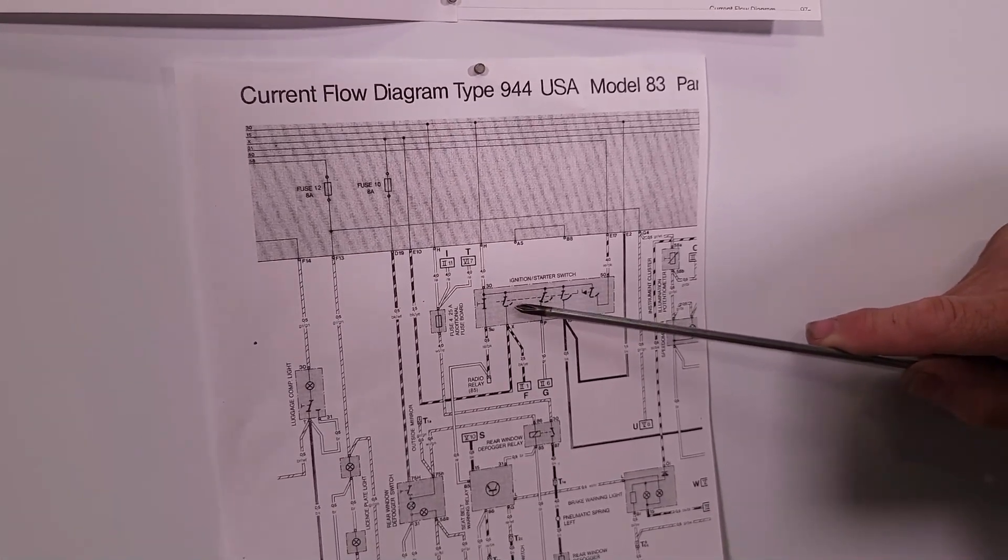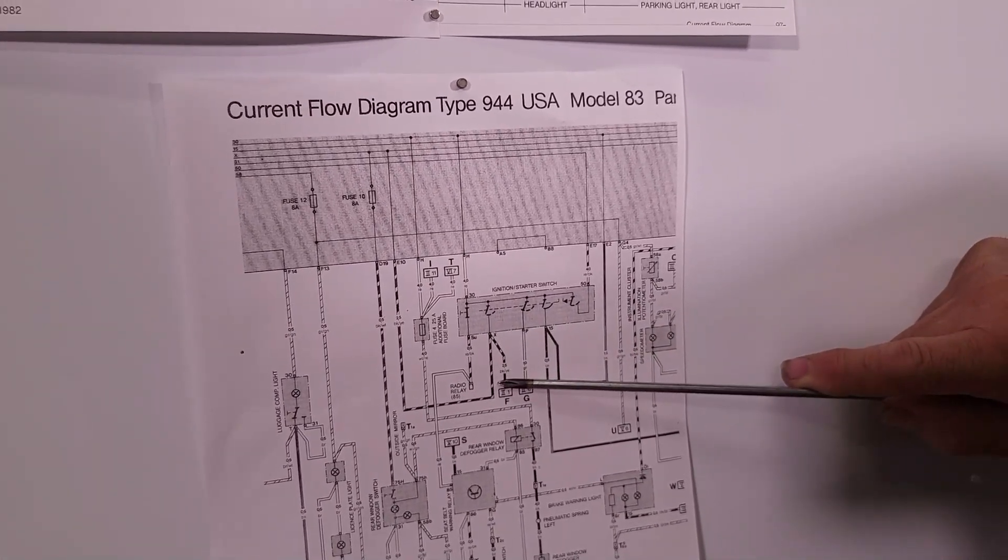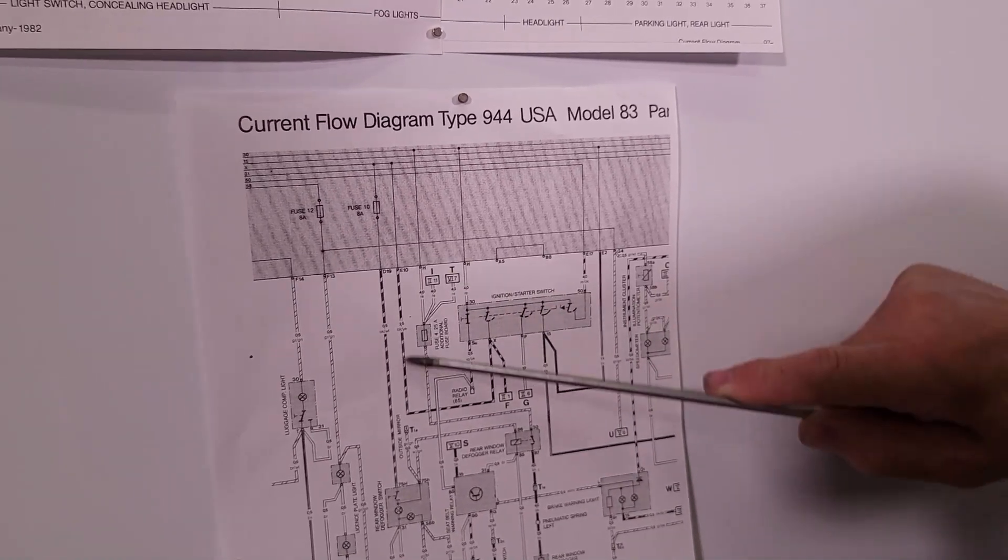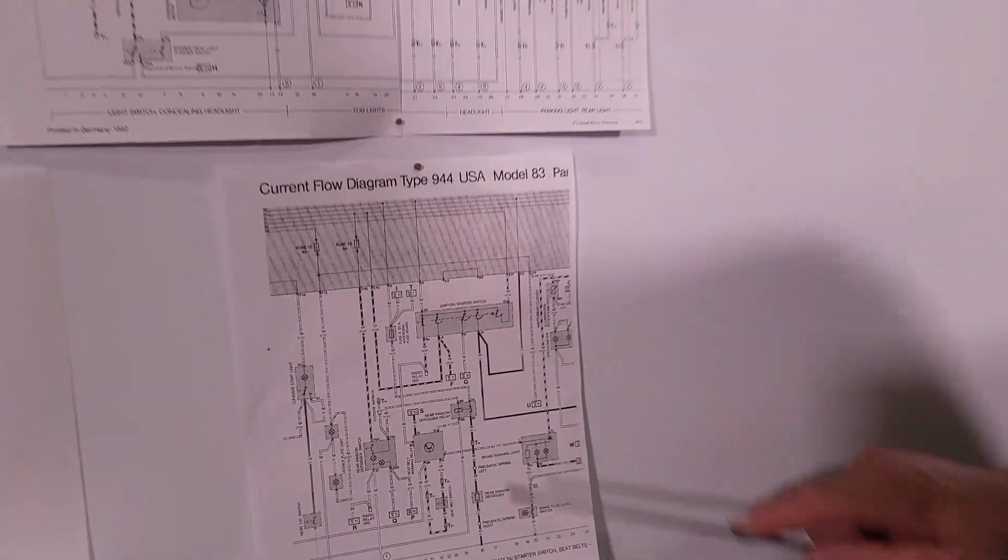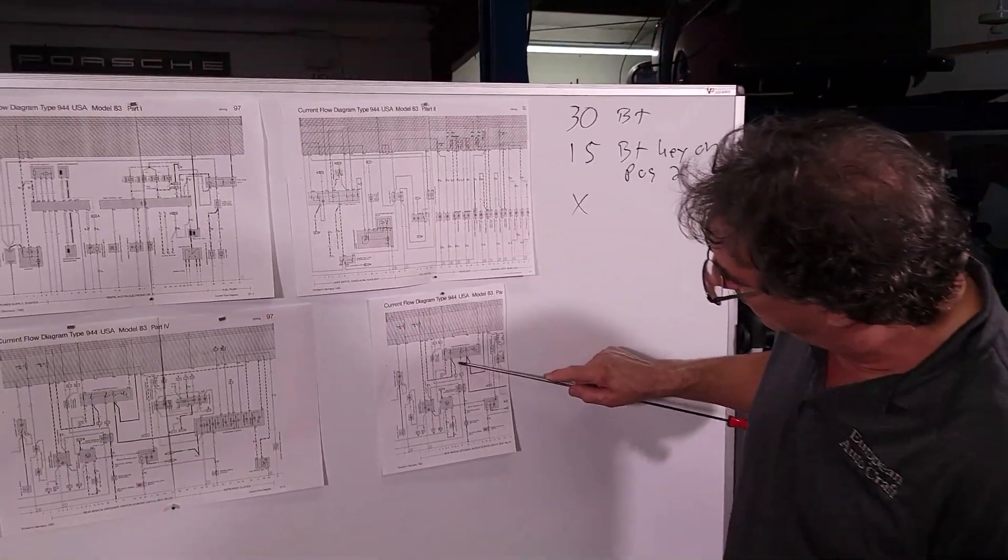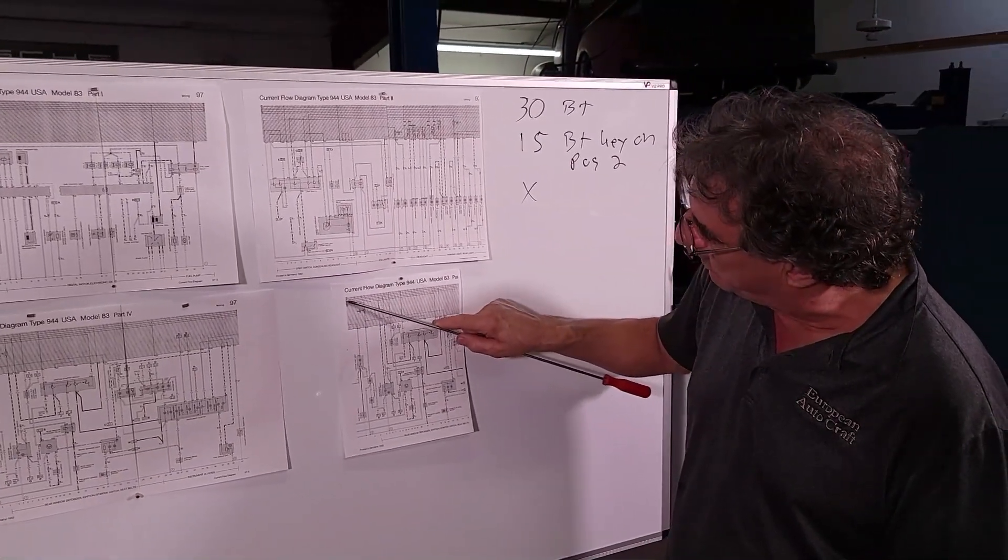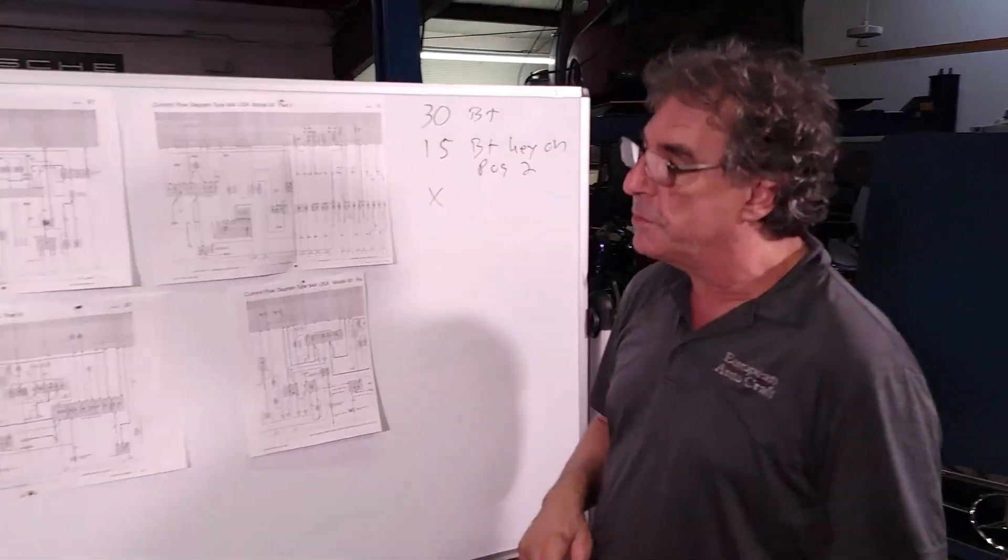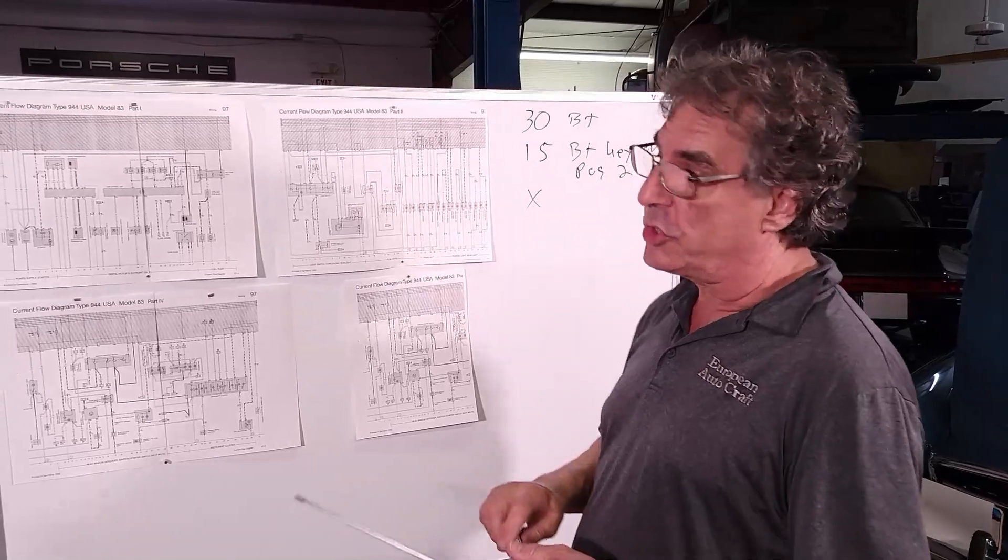This is how your ignition switch is layered inside. So the X terminal goes here. When you go to the start position, this loses battery power. In the bigger diagrams, we'll track this out and I'll show you what loses power. When that happens, you can see this one does go right to the X bus right here, right across inside the entire fuse panel. So that's load reduction is X.